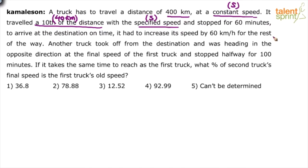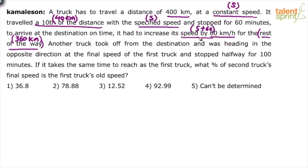It stopped for 60 minutes in the middle. Obviously, when you have stopped, you will take a longer time to reach the destination. But to arrive at the destination on time, it had to increase its speed by 60 kilometers per hour for the rest of the way. The rest of the way is 360 kilometers — 400 minus 40. This remaining distance was covered at the new speed S plus 60 kilometers per hour. So the original speed is S and the new speed is S plus 60.